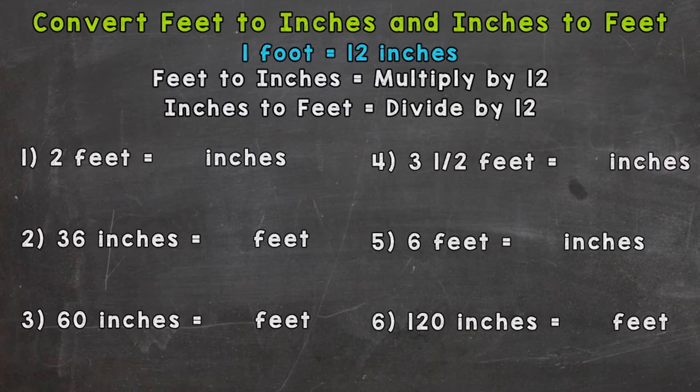So one foot equals 12 inches. And then also we have two hints here. When we're going from feet to inches we multiply by 12. If we're going from inches to feet we divide by 12. So let's jump right into the six example problems here that hopefully will help you get this down.